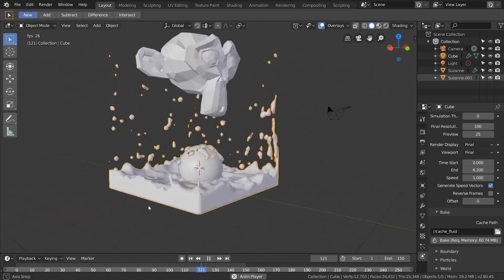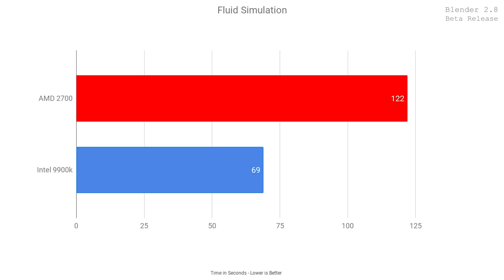Then on to a fluid simulation benchmark. The Ryzen system took two minutes and two seconds to complete, whereas the Intel system took only one minute and nine seconds. I ran this multiple times as I was getting some inconsistent results with the fluid simulator, and took the average from both systems. Intel came in at 55% faster on the fluid simulator.